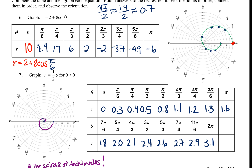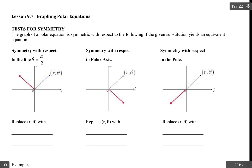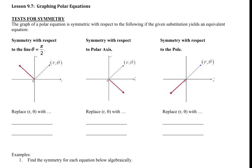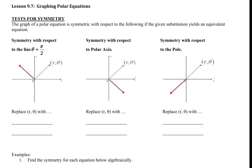All right, welcome back. Let's continue on with our lesson 9.7 notes. On your note page you're going to see that we have here test for symmetry. We can test if a graph has symmetry just like we did with the coordinate plane and xy Cartesian coordinates — we looked for x-axis symmetry and y-axis symmetry. Here we're going to look for three different types of symmetry.